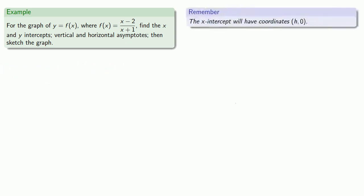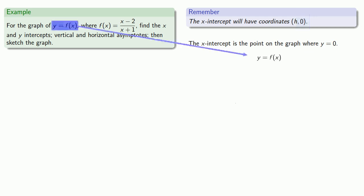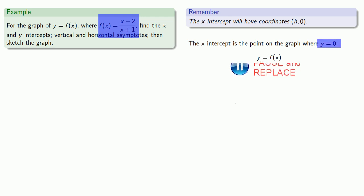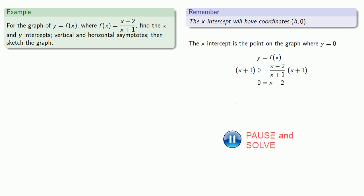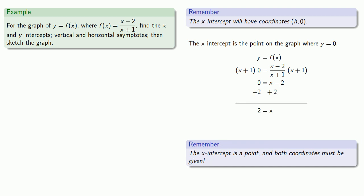The x-intercept will have coordinates (h, 0). The x-intercept is the point on the graph where y is equal to 0. So we have y equals f of x, which equals x minus 2 over x plus 1, and y is equal to 0. To solve this equation, we multiply both sides by the denominator x plus 1, simplify, and solve. Remember, the x-intercept is a point and both coordinates must be given. So our point has x equal to 2, y equal to 0, and the x-intercept is at (2, 0).